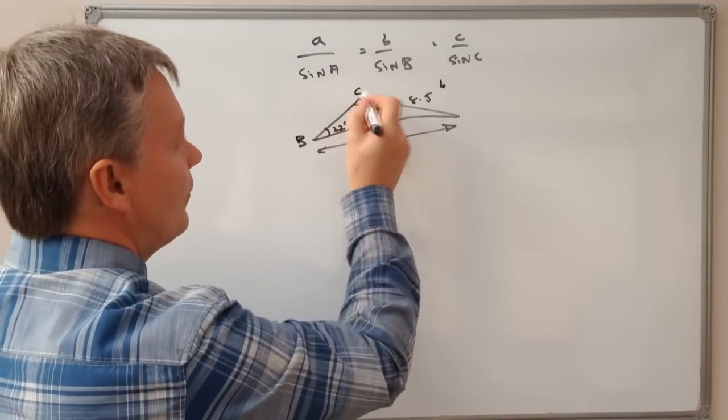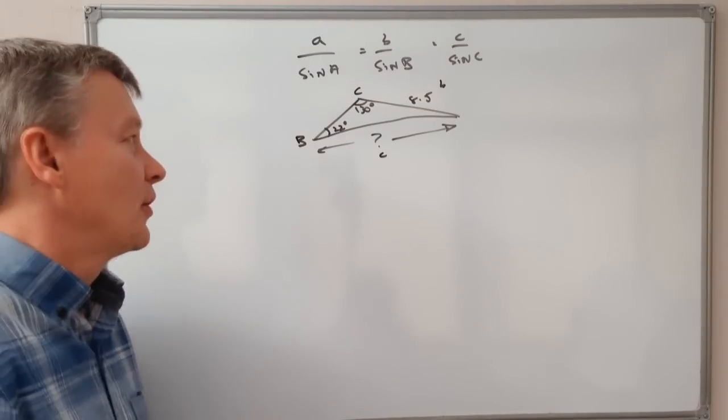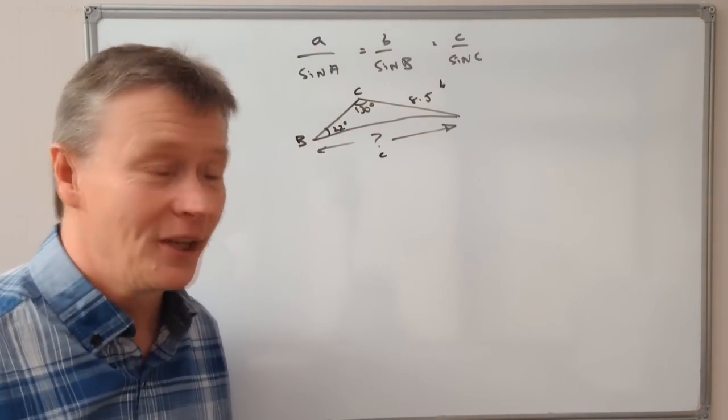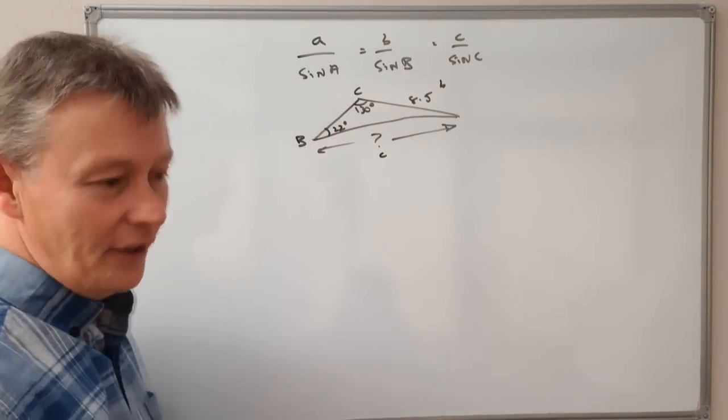I'm going to call this C, and this bottom bit is going to be small c. I could call it A and B if I wanted to, it doesn't really make any difference, providing you make sure that you use this relationship in the correct way.